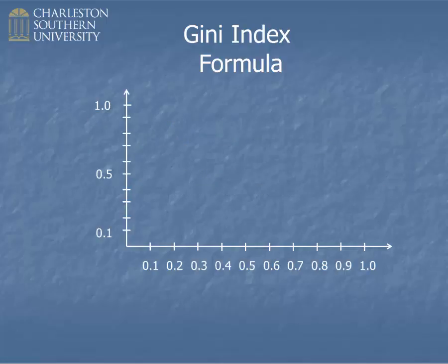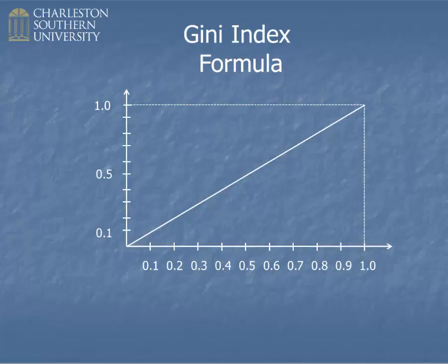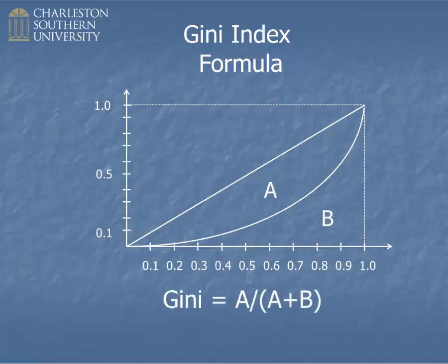If you think about your Lorenz curve, you have a graph, and you have your line of equality. Some of you sort of box this thing in — that's okay. I usually draw the Lorenz curve as a graph, but you can box it in like that. And then, of course, you have your Lorenz curve from your data. The Gini index is simply the ratio of these areas: area A divided by the sum of area A plus B.